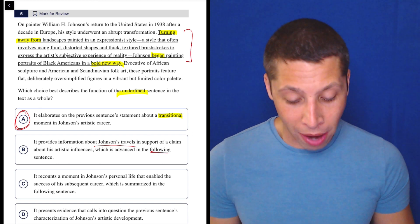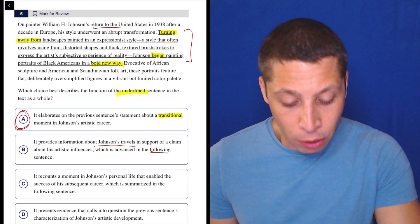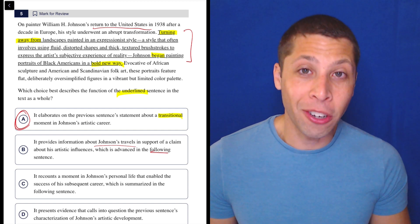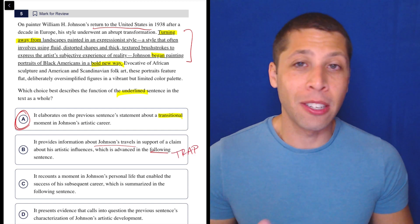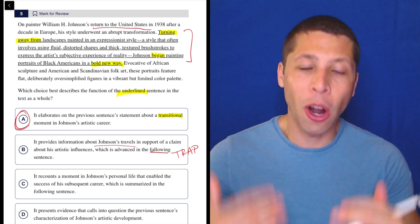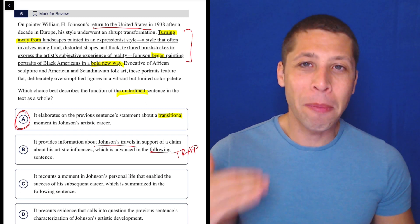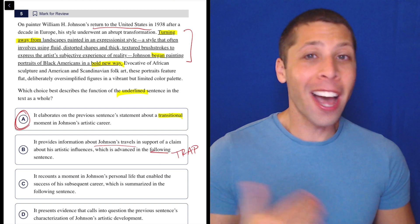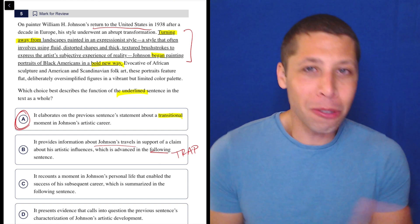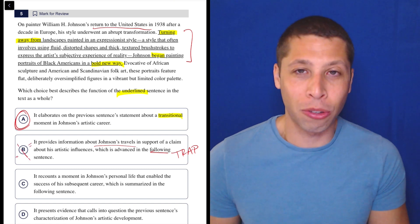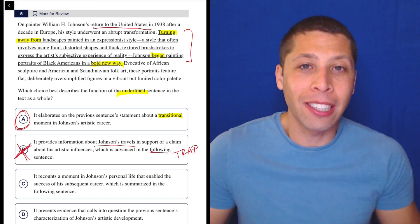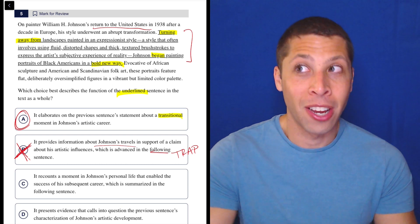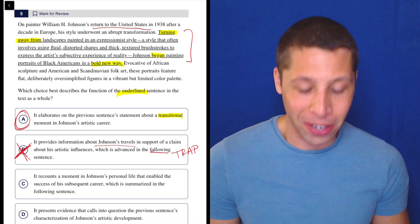They do talk about his travel right here, right? He returns to the United States after a decade in Europe. That's about travel. So this is why there's some very obvious traps to these questions about the underlined portion is they're going to have answers that are about parts of the passage that are not underlined. So just all you gotta do is stay focused on what they're asking of you. And it's really easy to avoid those traps because it's not like it's subtle here. This is very clearly about other parts of the passage, not underlined.